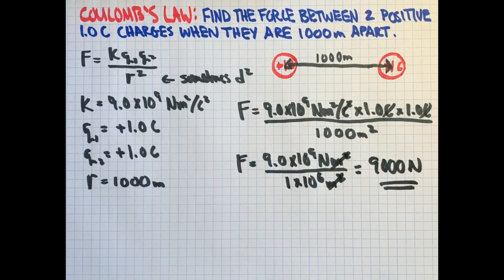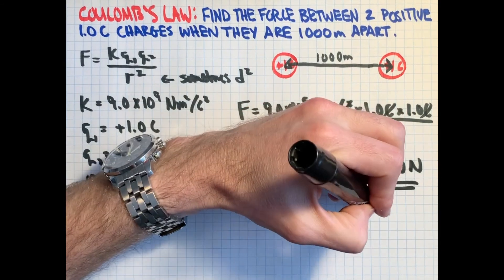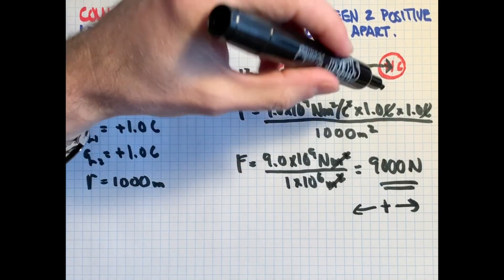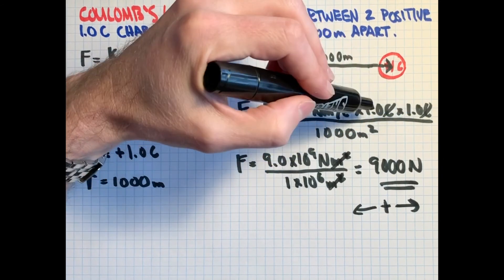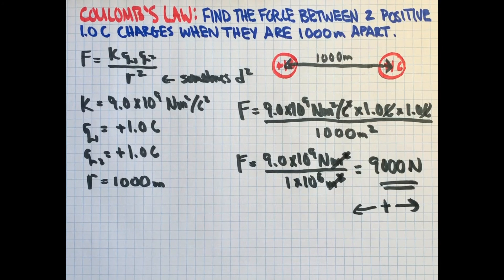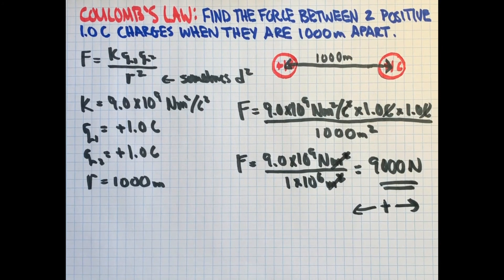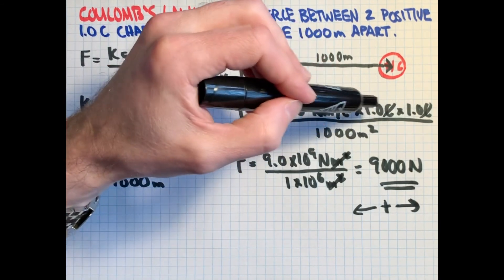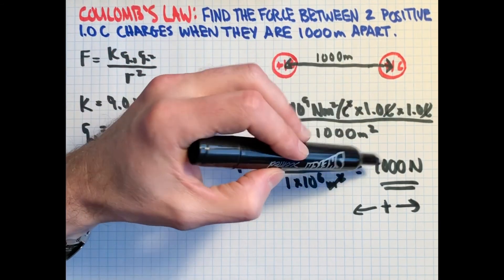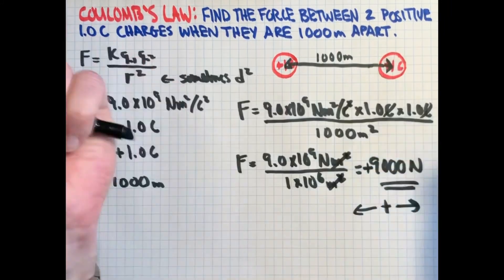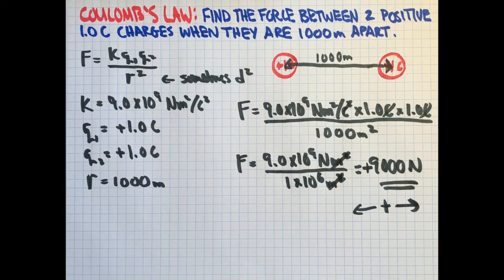Note here we've got a positive answer, which tells us that this is repulsive. A positive answer means repulsive. Since I have two positive numbers here, we have two positive charges. We know that like charges repel. Two negative numbers would also make a positive. So getting a positive answer here means that these are repelling each other. They are not attractive.